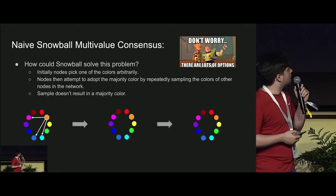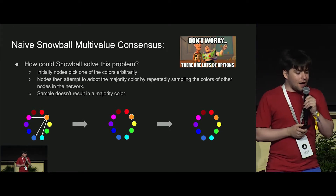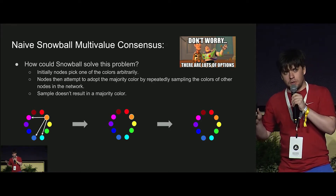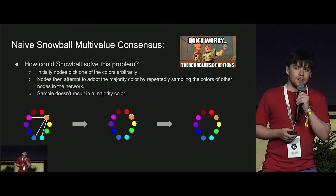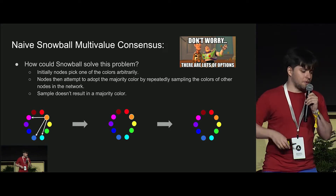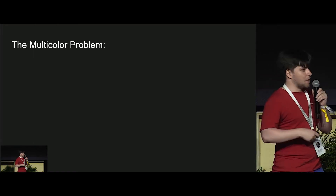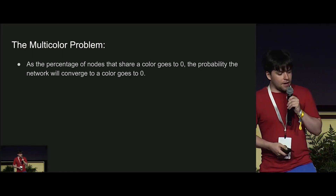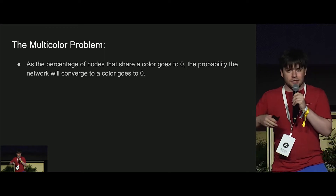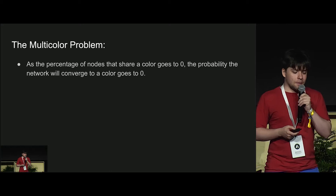So that sucks. Not great — borderline useless. We need to fix that. The actual problem we call this is the multicolor problem. Essentially, as the percentage of nodes that share a color goes to zero, the probability of termination also goes to zero, which is a very problematic observation for our system.